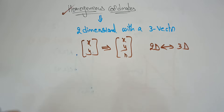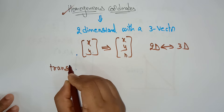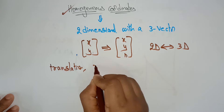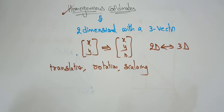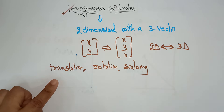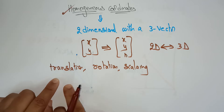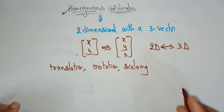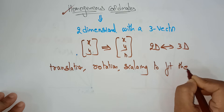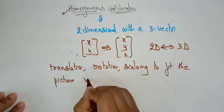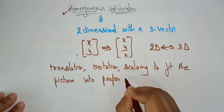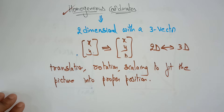Here we perform translations, rotation, and scaling. I already explained these concepts of translation, rotation, and scaling in 2D objects — if you don't know, go watch my previous videos. These homogeneous coordinates perform translations, rotation, and scaling to fit an object into the proper position. That is why we use homogeneous coordinates.